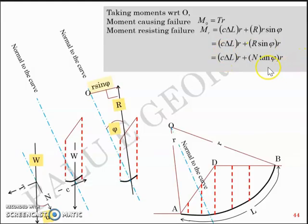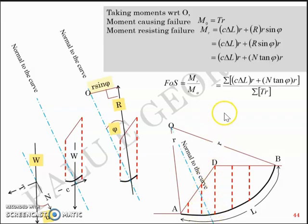So I have an expression for moment resisting failure and I have an expression for moment causing failure. You simply take the ratio of MR to MO and you get the factor of safety. Since this is represented in delta L term which means elements are considered as wedges are considered as elementary points, you need to integrate or you need to sum. So I have a sigma sign here.